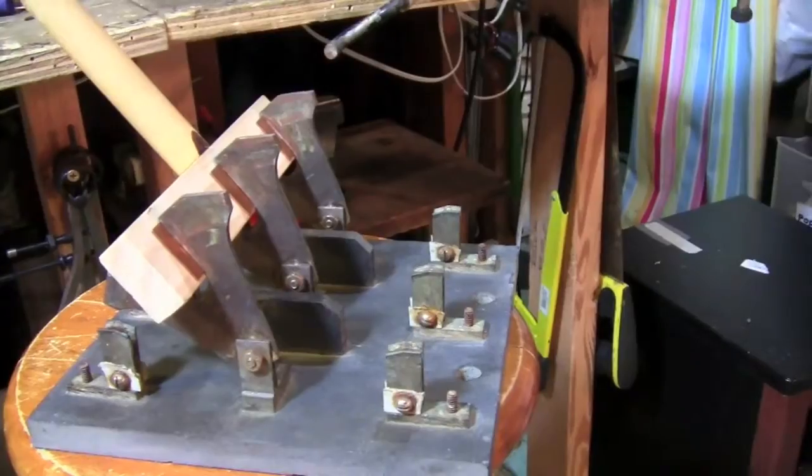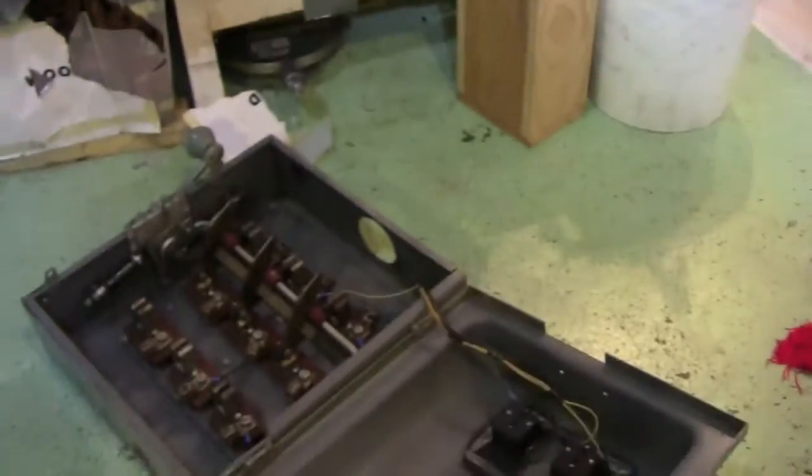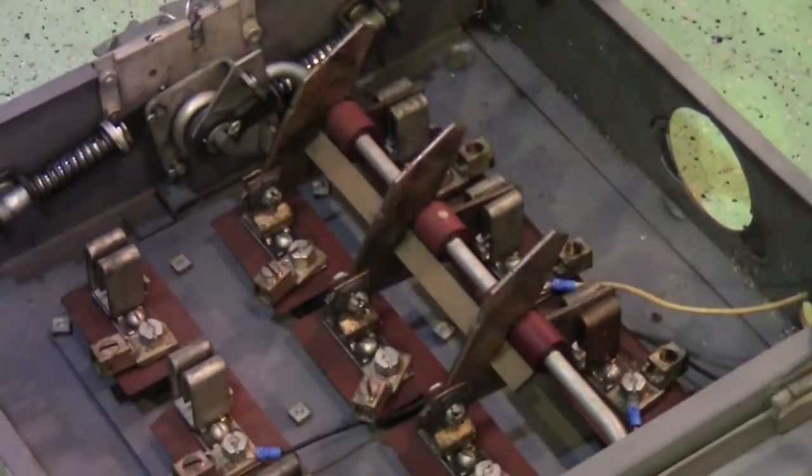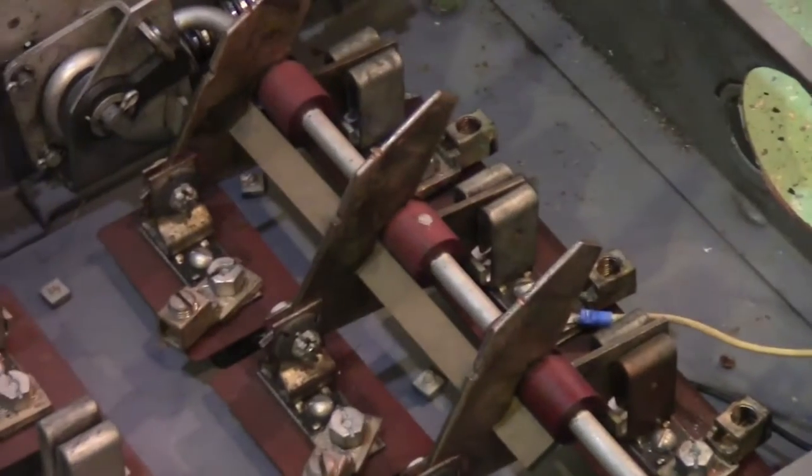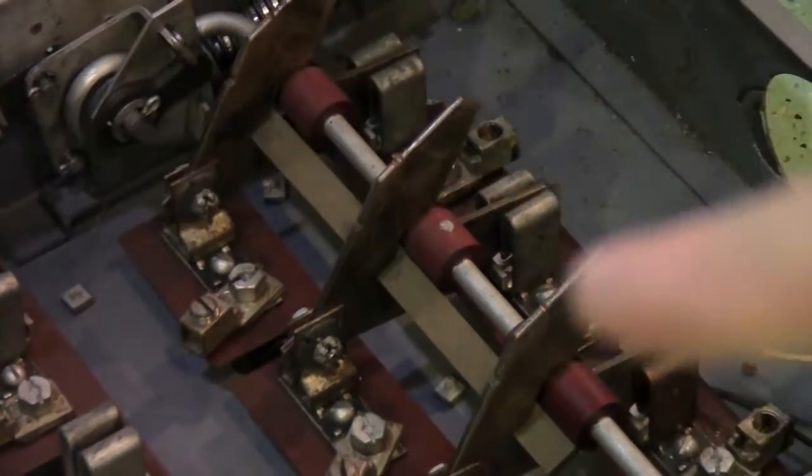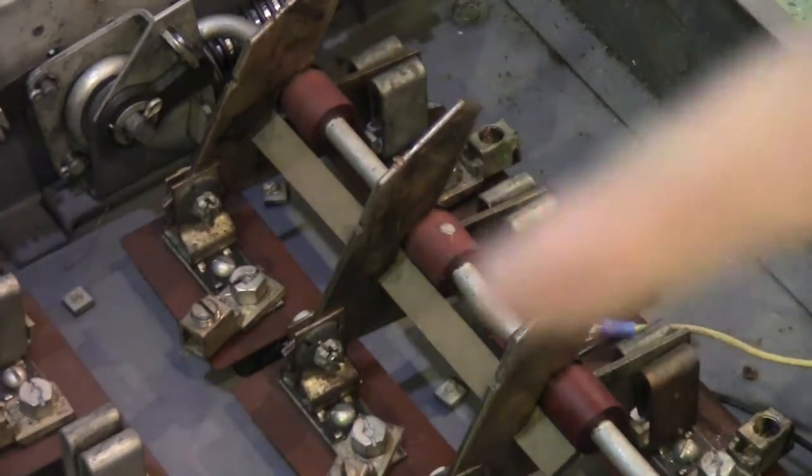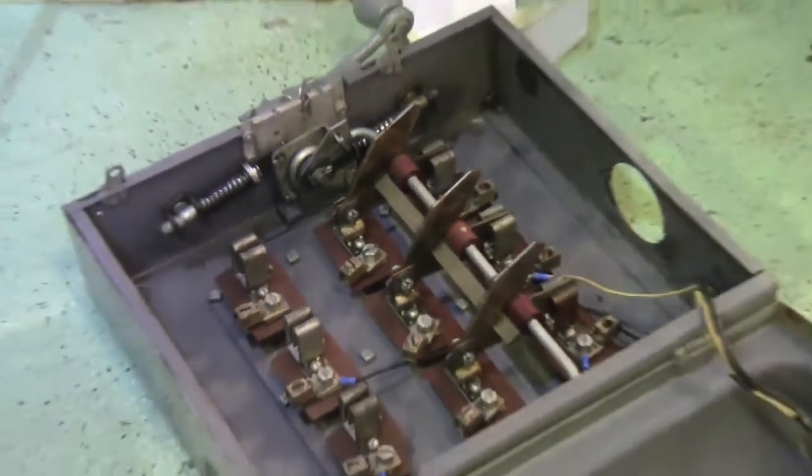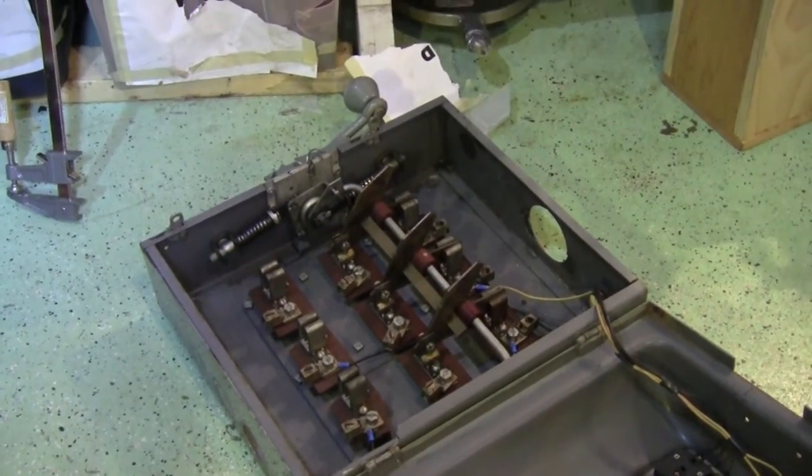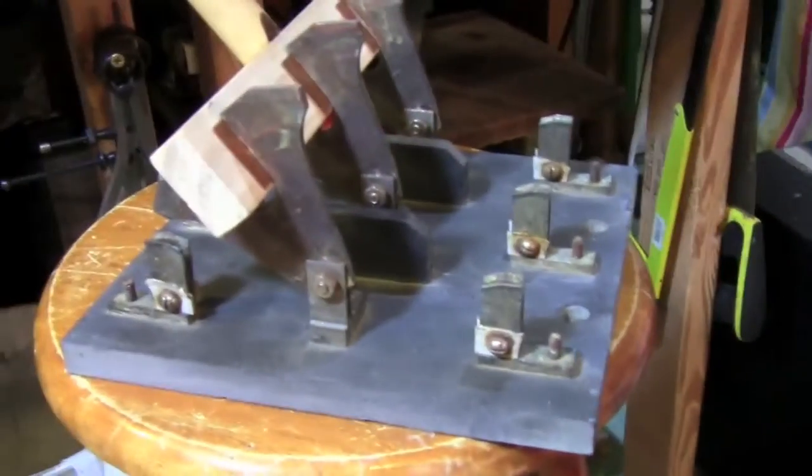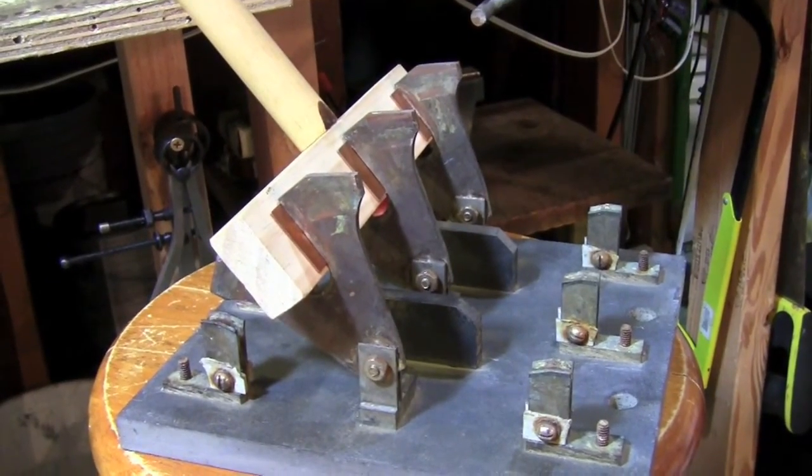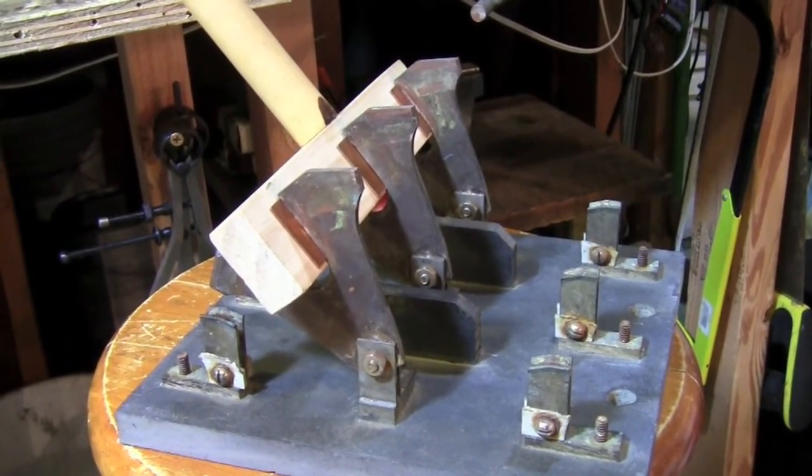It's a lot like this switch here, my big Square D one. As you can see those knife blades right there, and there's the rod, and then there's the contacts. That's three pole two throw, which is the same as this one. Three pole, two throw.